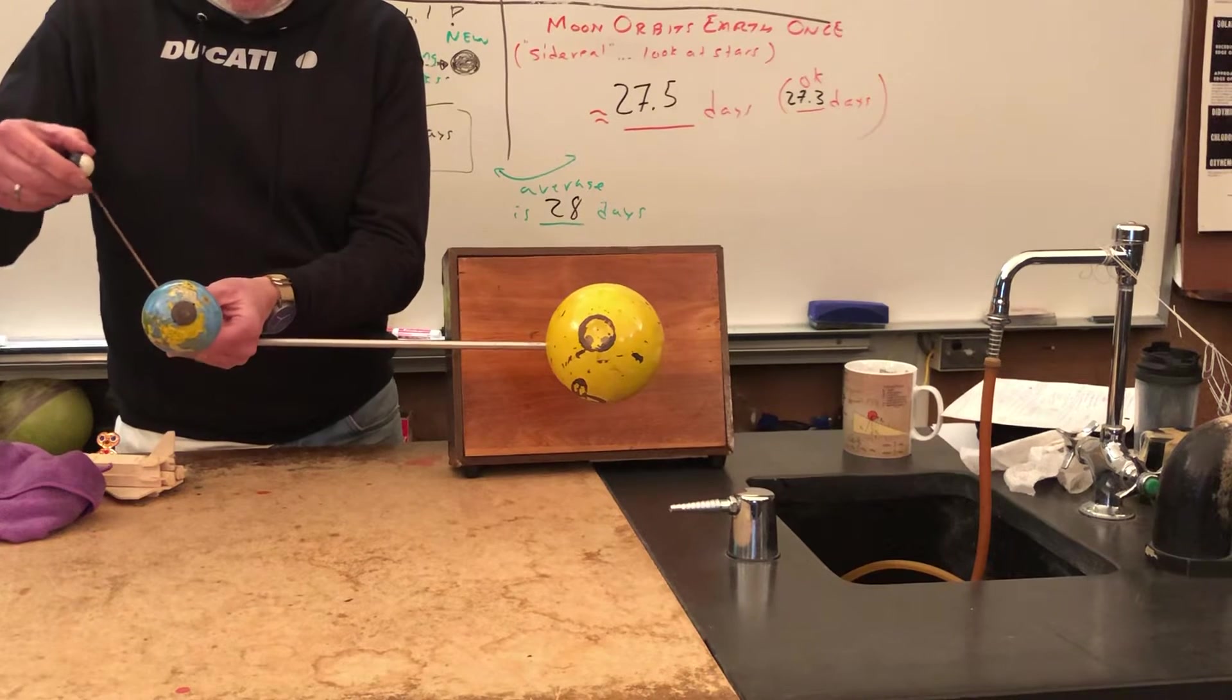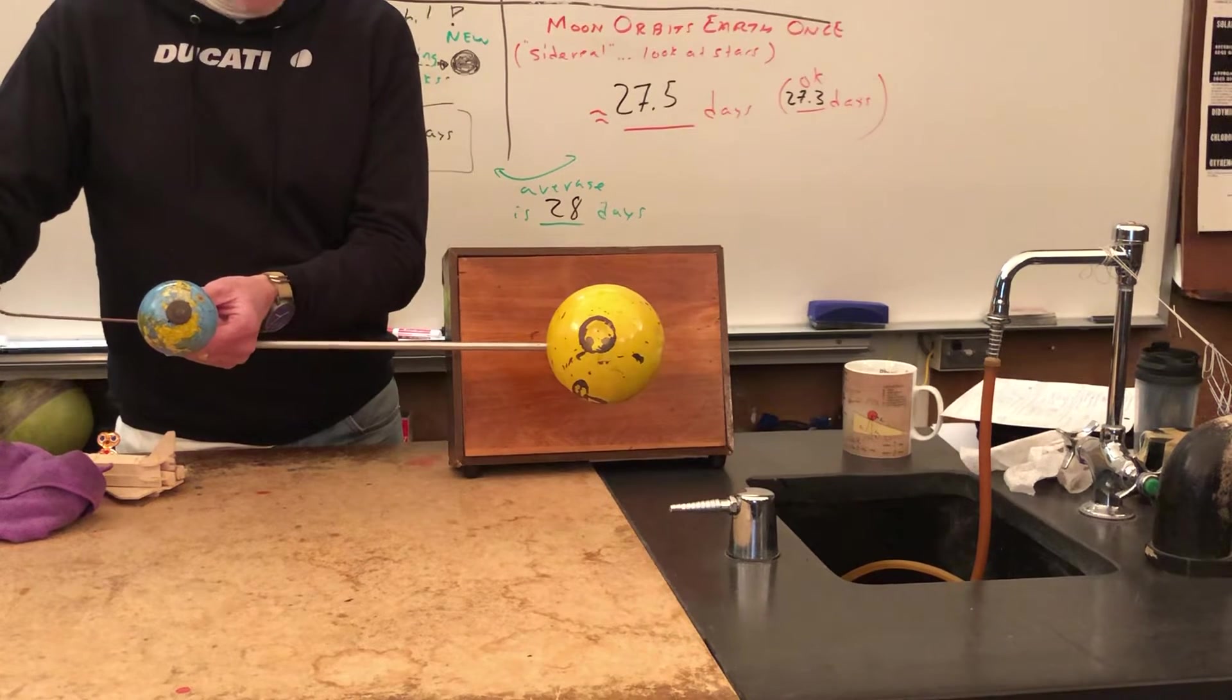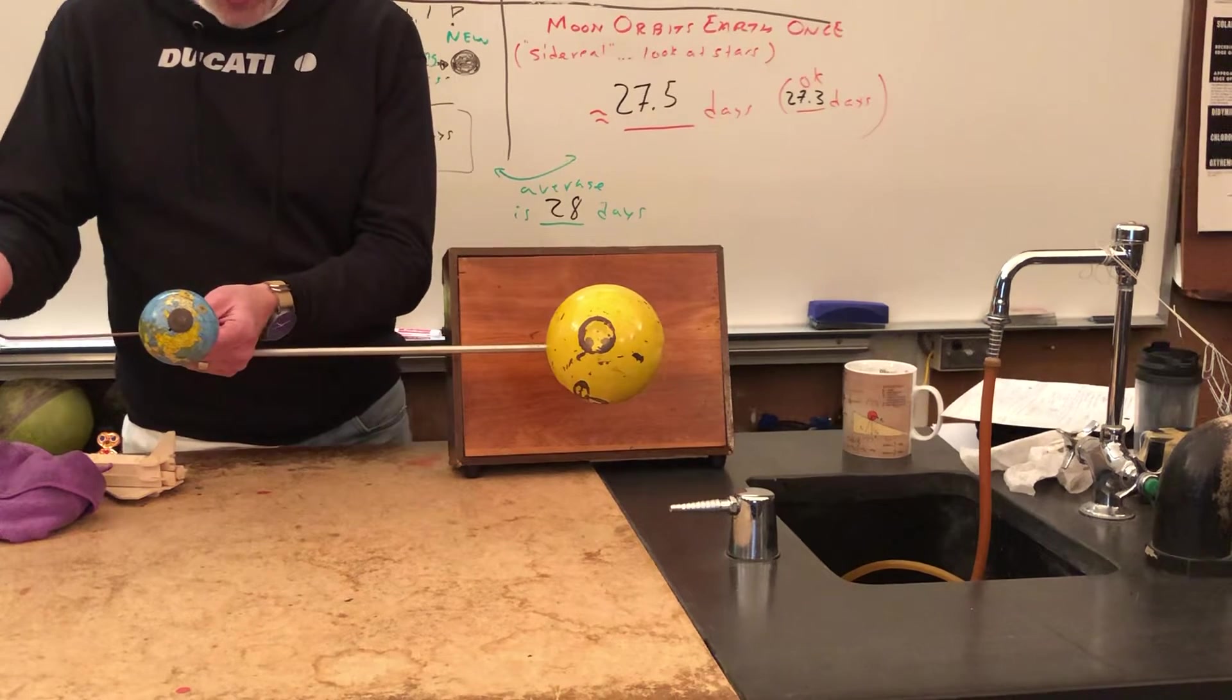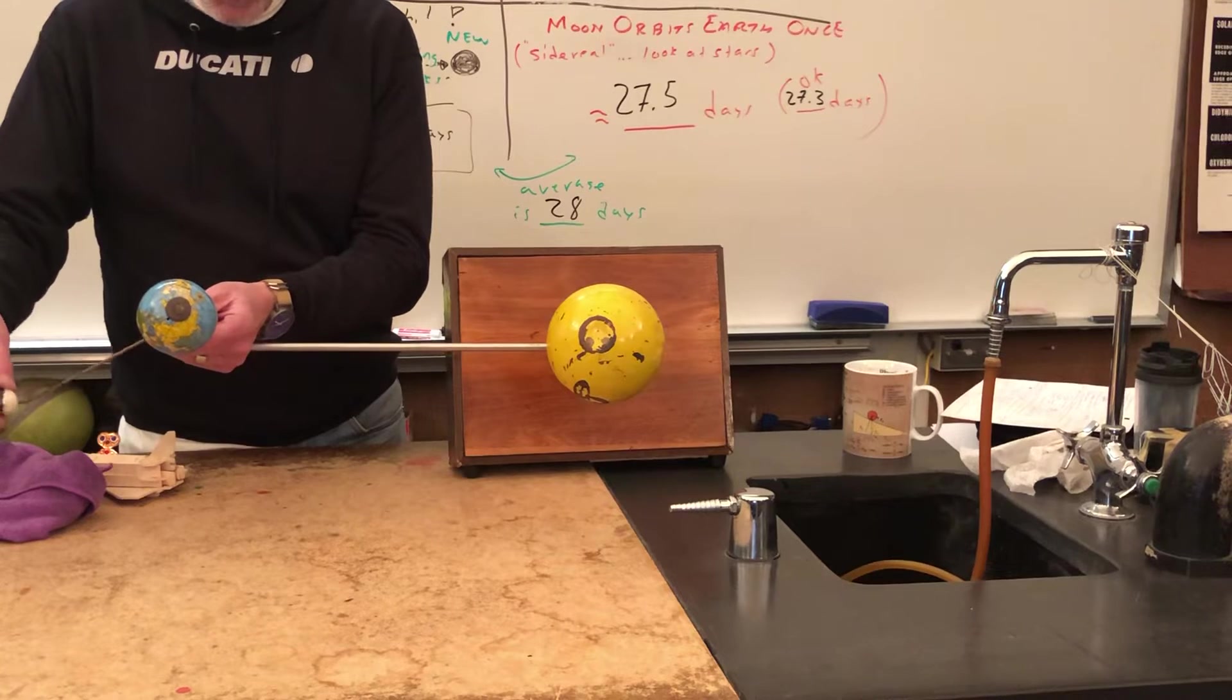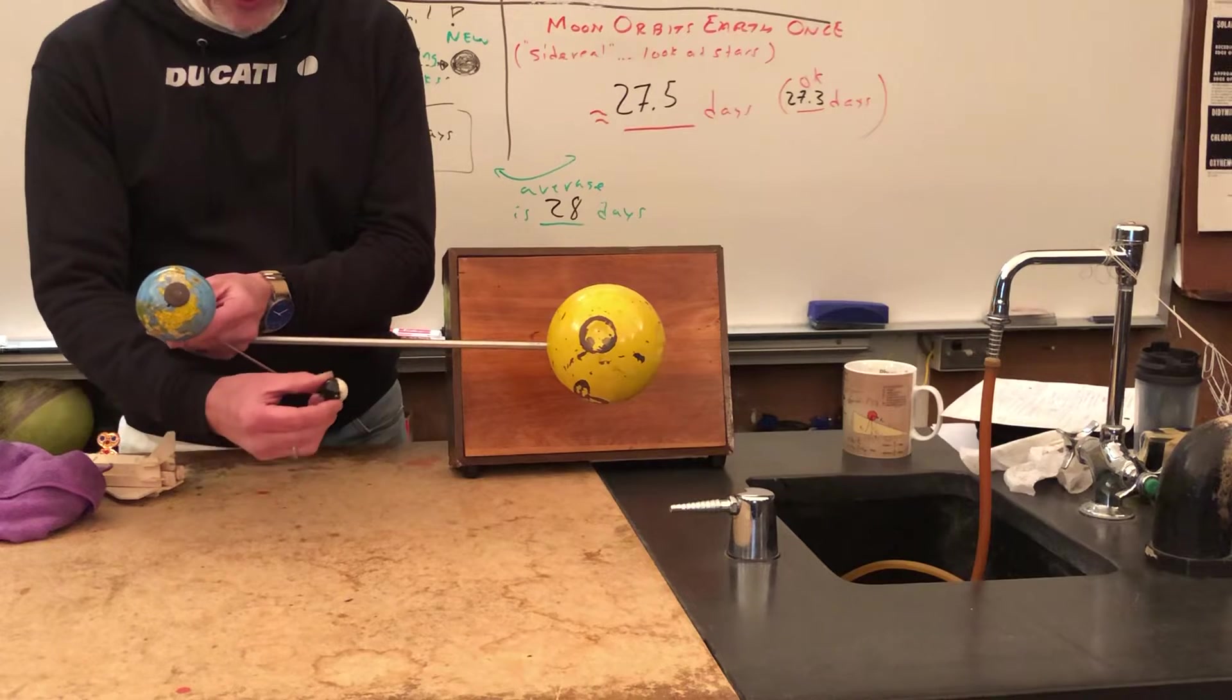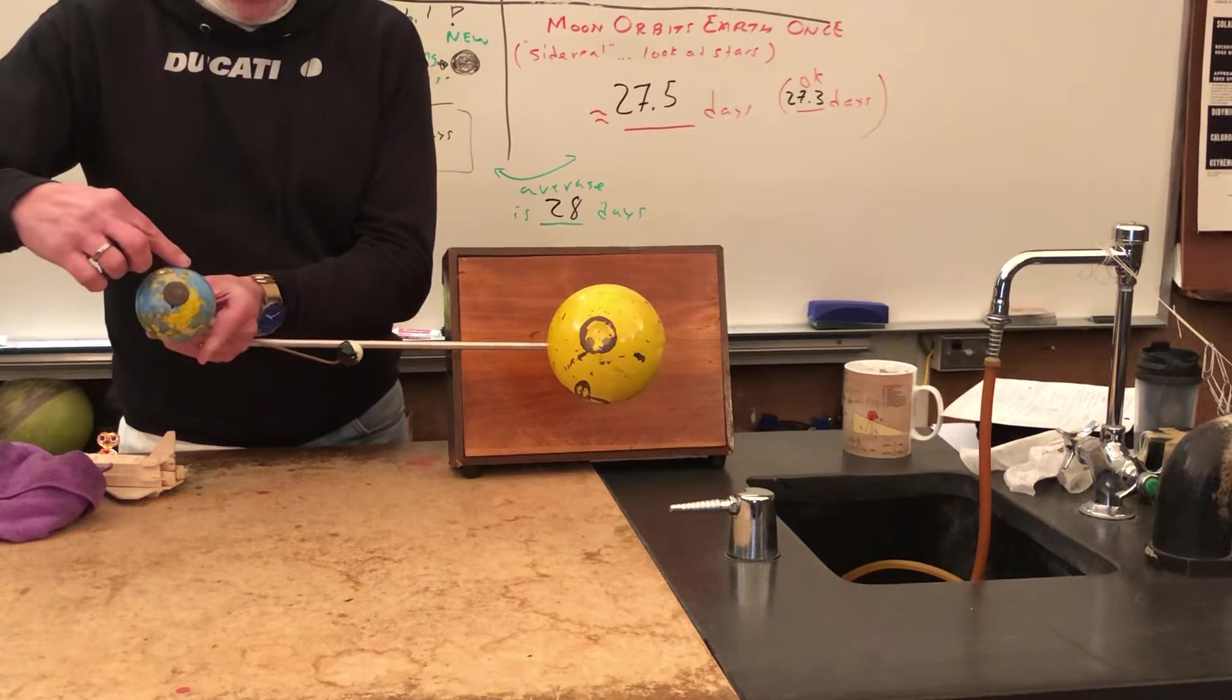And as it orbits us, whatever side is facing sun is lit. Don't worry about shadows yet either. We'll get to that after we do moon phases. Whatever side is facing sun is lit. So too with Earth. Now we know Earth does spin.